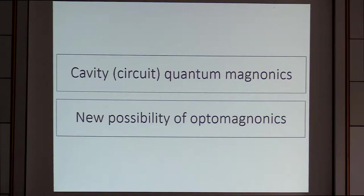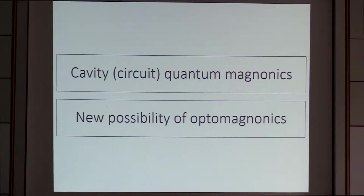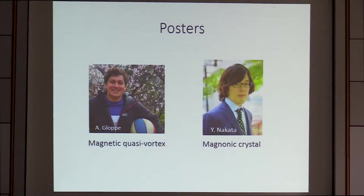I split my talk into two parts. The first part is about cavity quantum magnonics, which is basically the low temperature microwave experiments. The latter half is about the new possibility of optomagnonics. There are also other activities we are doing, like magnetic quasi-vortex or magnonic crystals — if you're interested, please ask those people.